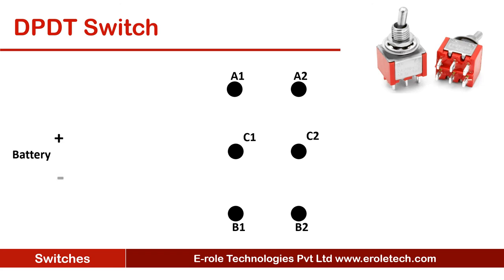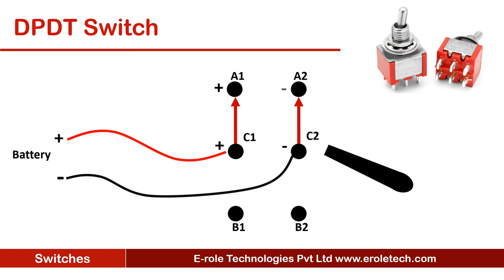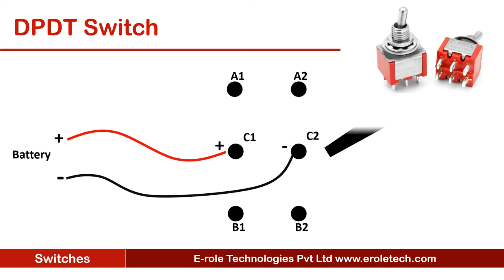If we take a battery and connect the positive and negative terminals to its middle pins, then both the middle pins will get positive and negative polarity. If we push its lever downward, then its common pins will connect internally to A1 and A2, and those pins will get positive and negative polarity. When we push the lever upwards, then the middle pins will connect to B1 and B2, and these two pins will get positive and negative polarity.